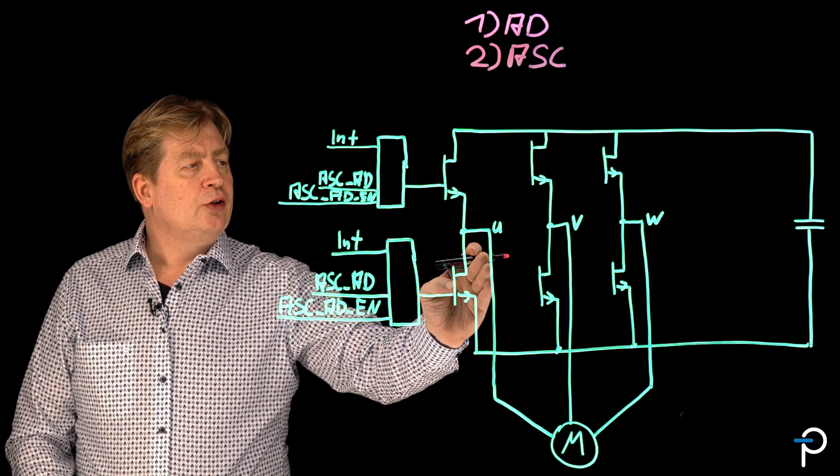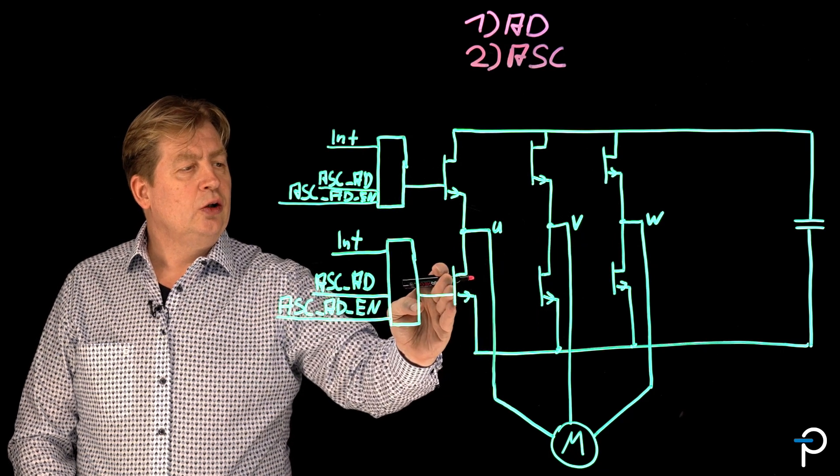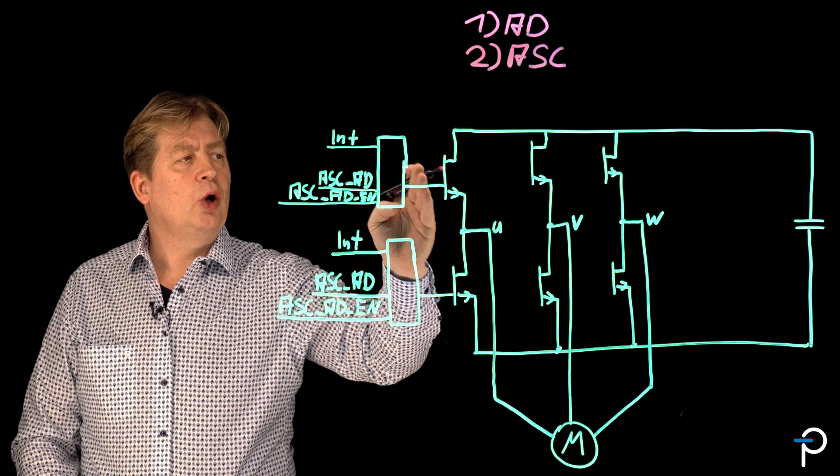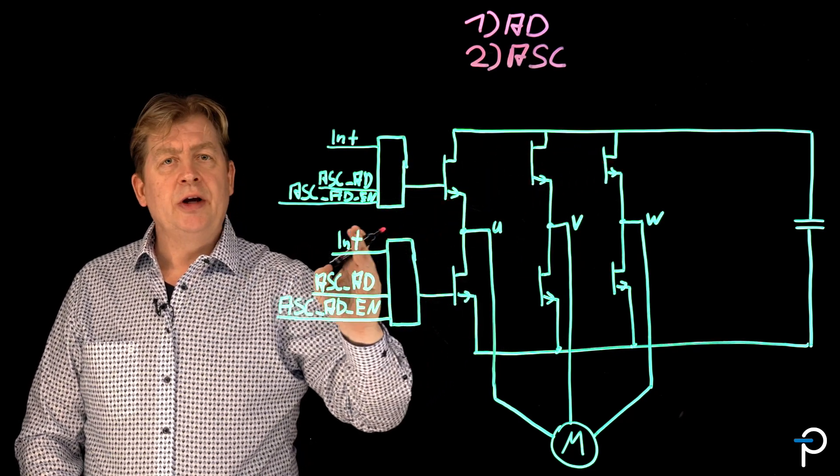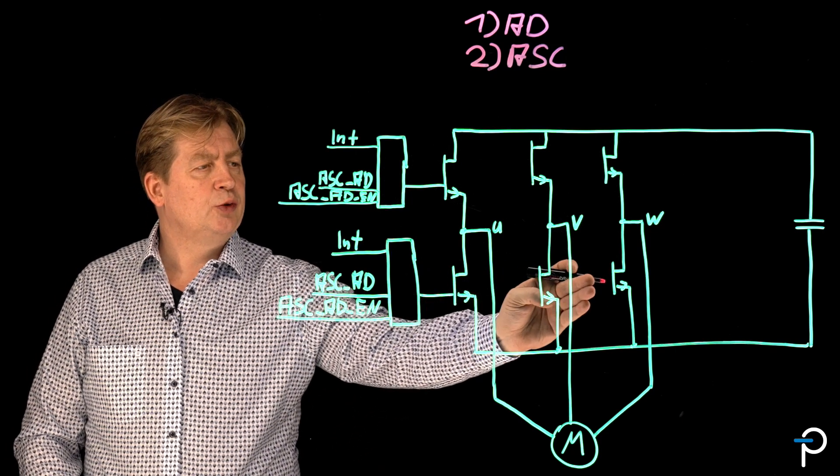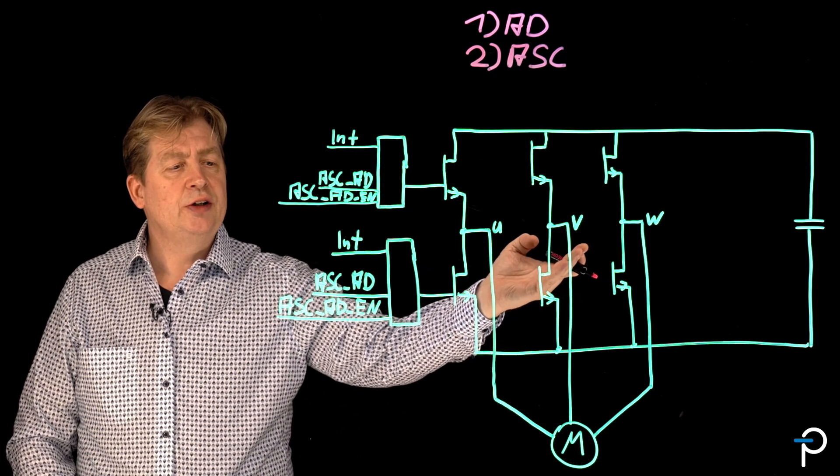To short the three phases we are turning on the bottom side IGBTs or the top side IGBTs. In my example here I am turning on the bottom side IGBTs or silicon carbide MOSFETs.